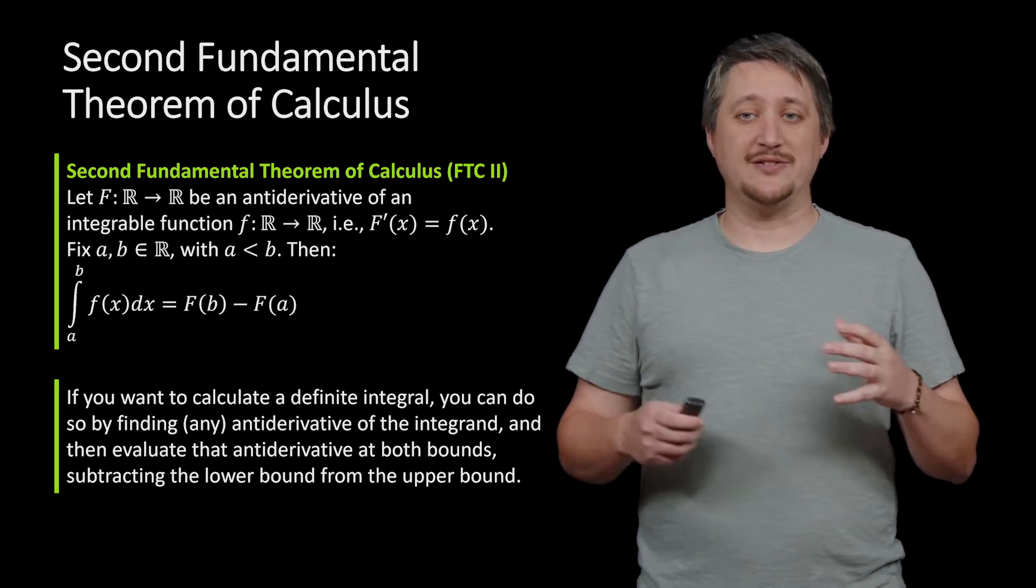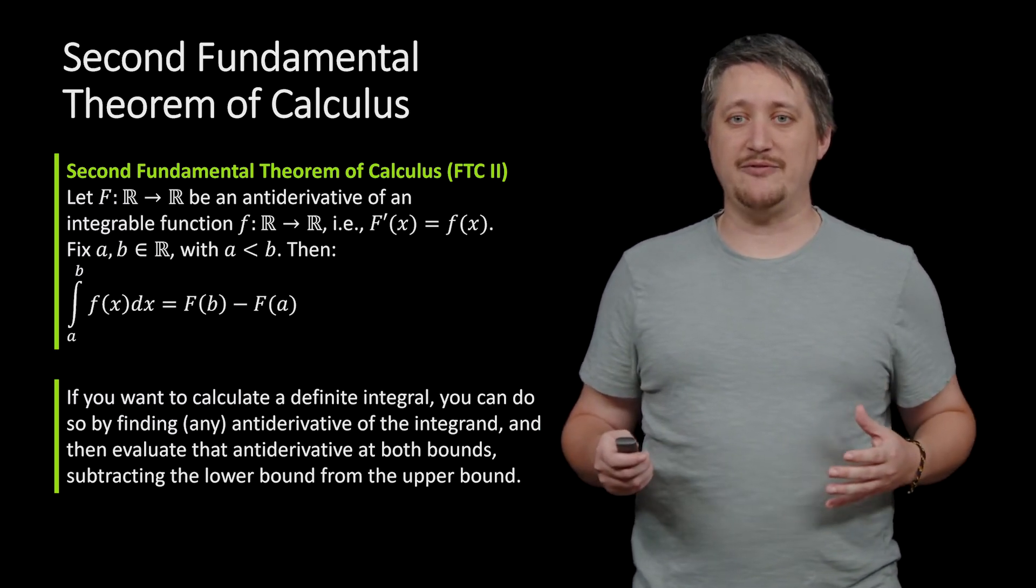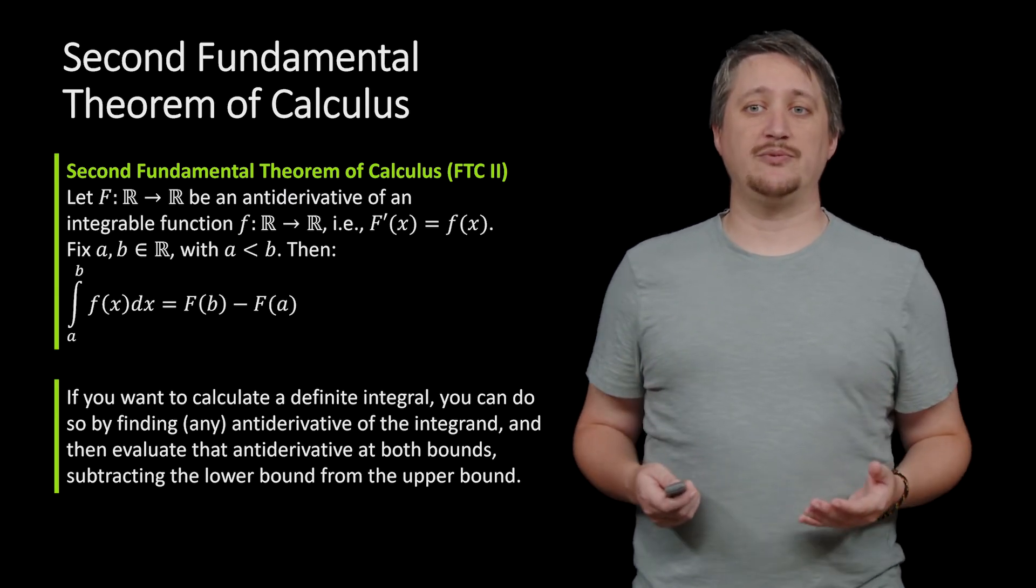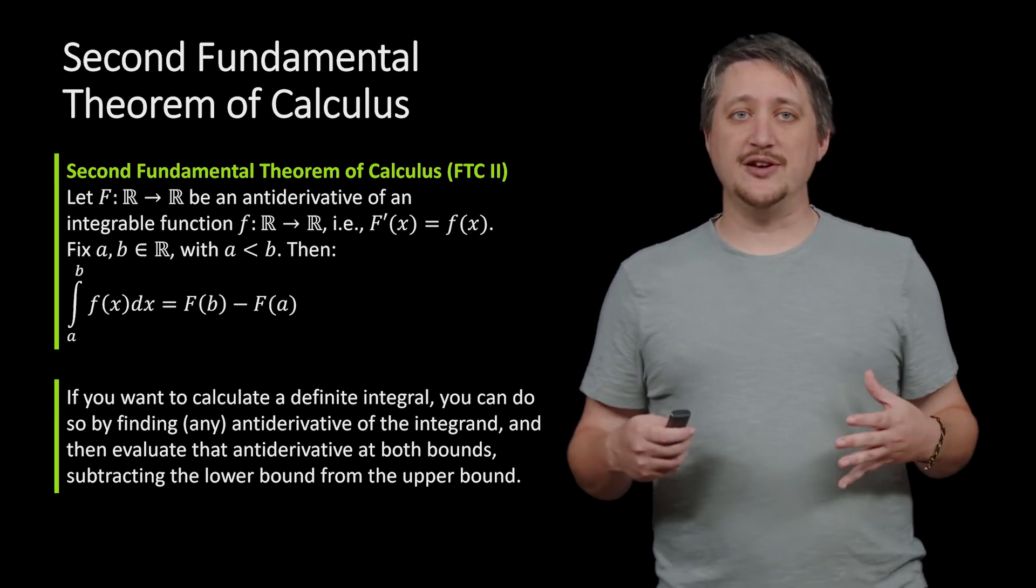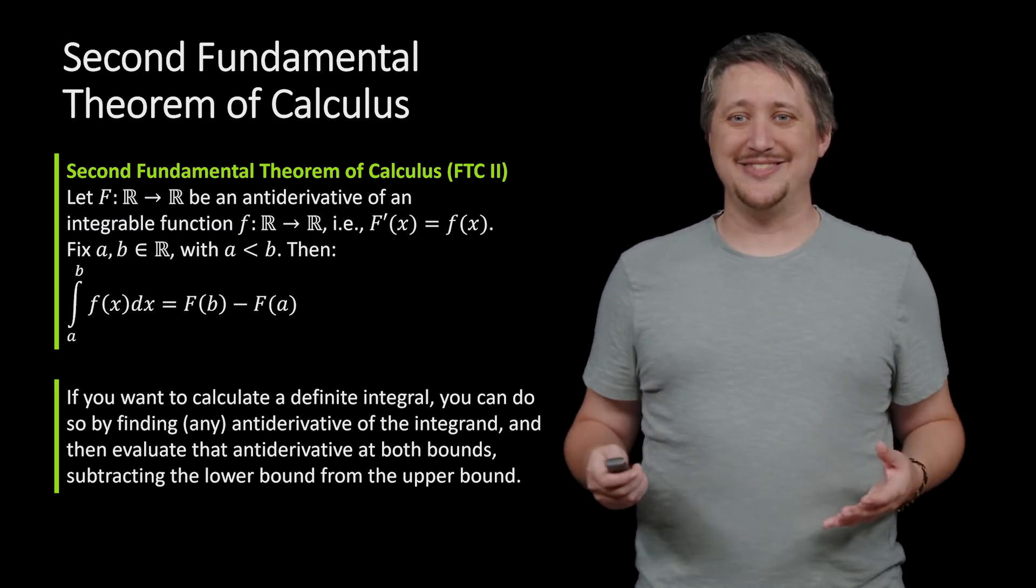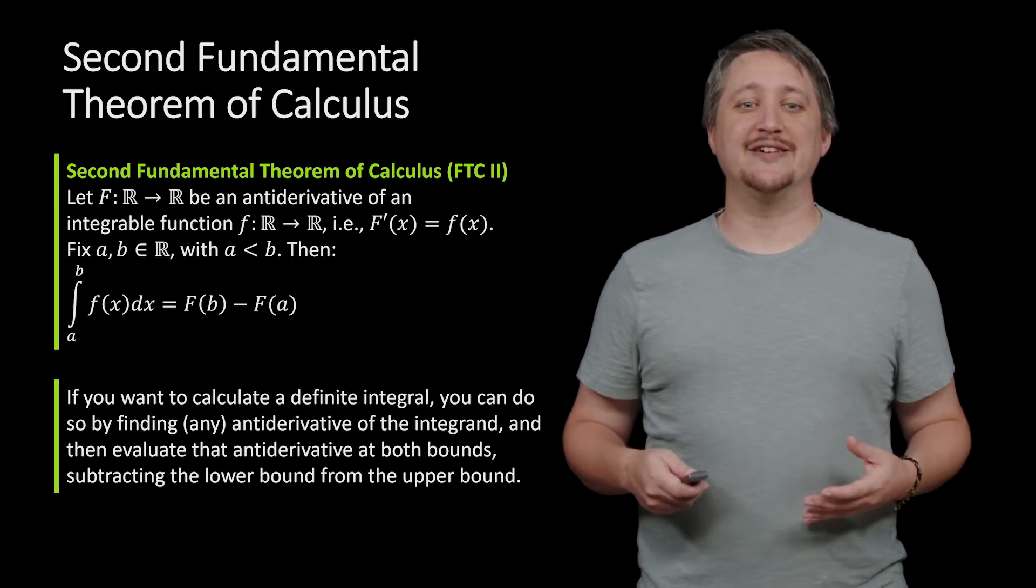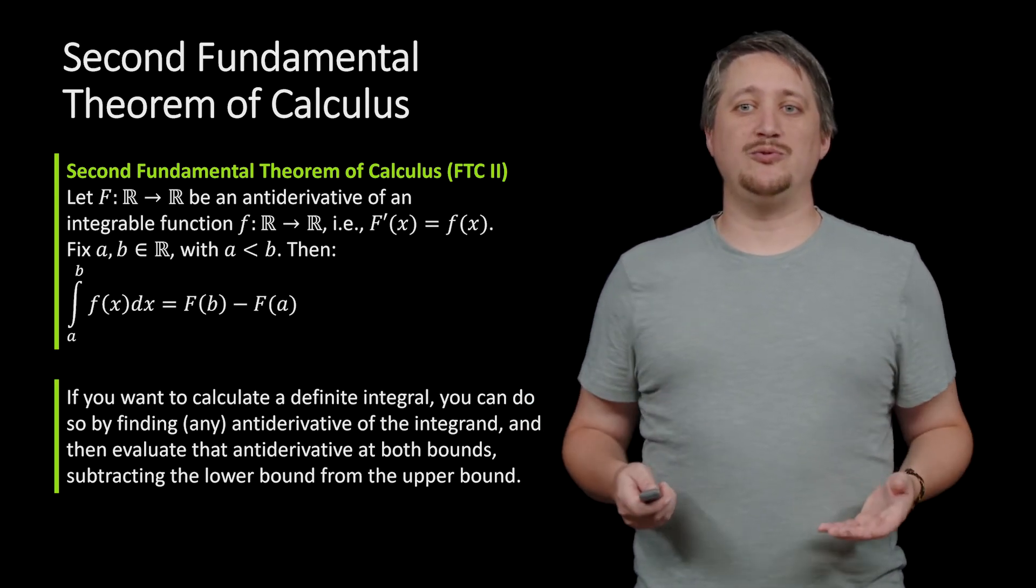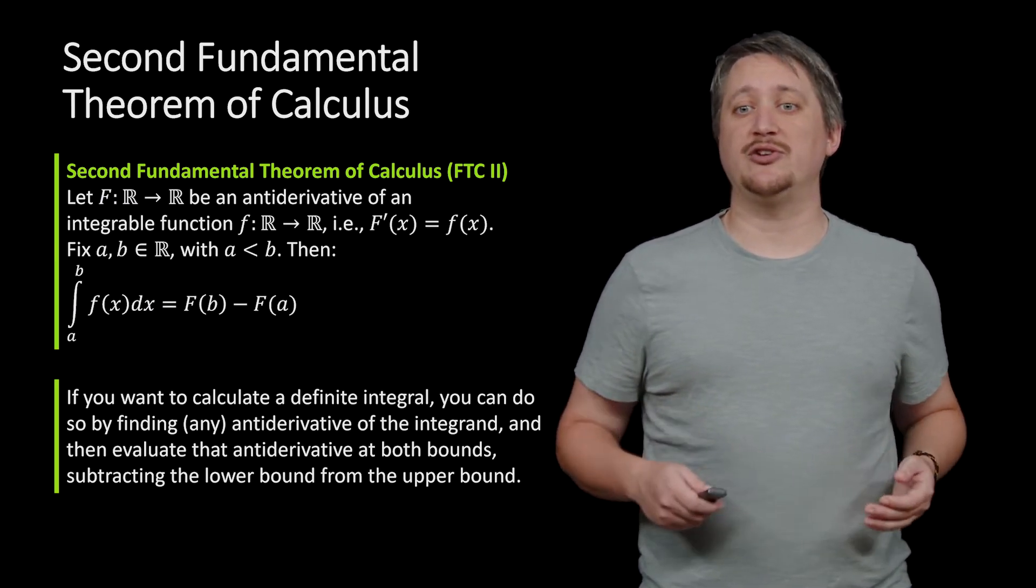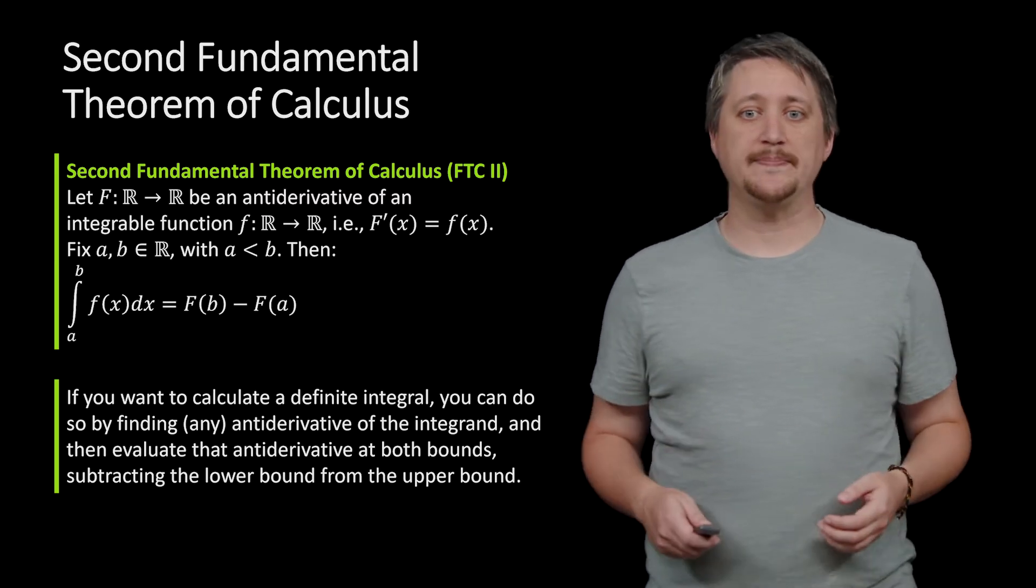Basically, you don't need any of the sigma notation or infinite rectangle craziness—you can do this just by using antiderivatives. This gives us another nail in the coffin for the Riemann approximation process. What this is telling us is that we can always do definite integrals by using antiderivatives rather than sigma notation, even with constant bounds as opposed to a variable.